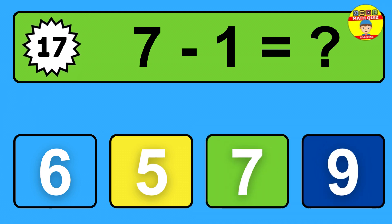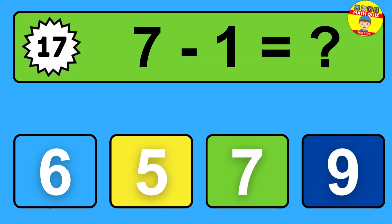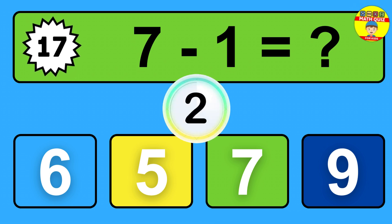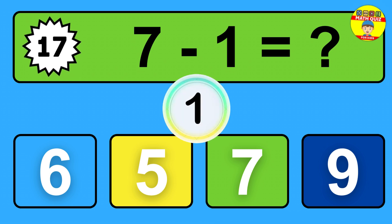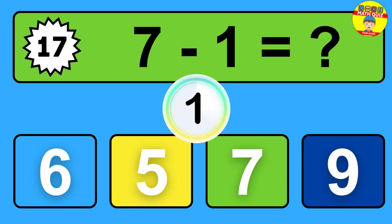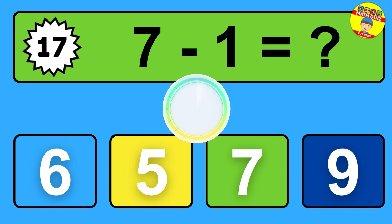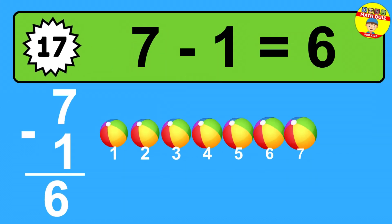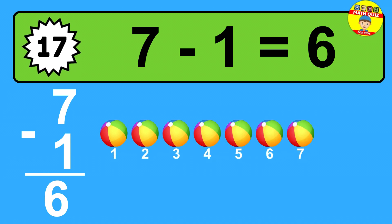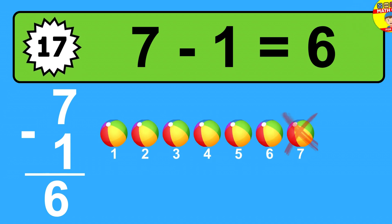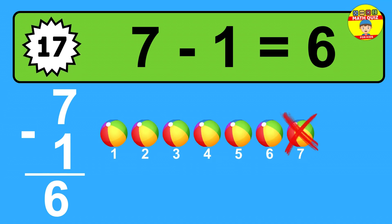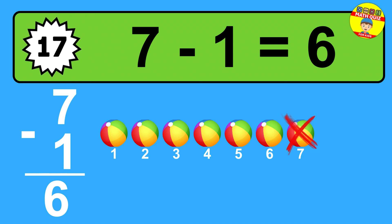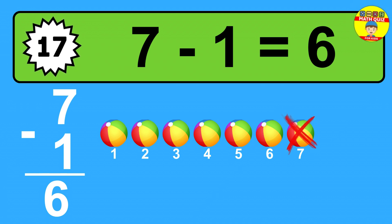Question seventeen: seven minus one equals what? The answer is seven minus one is six. Let's count it: one, two, three, four, five, six.